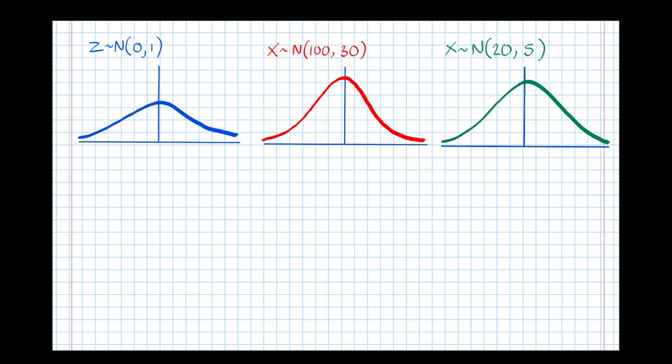So let's say on this first distribution, we want to measure the probability that something lies 1.5 standard deviations from the mean or more. What we're going to do here is calculate this area here, so the boundary is 1.5 standard deviations.